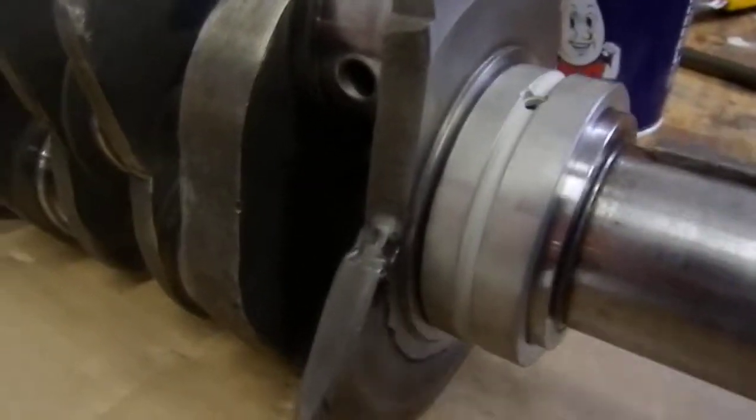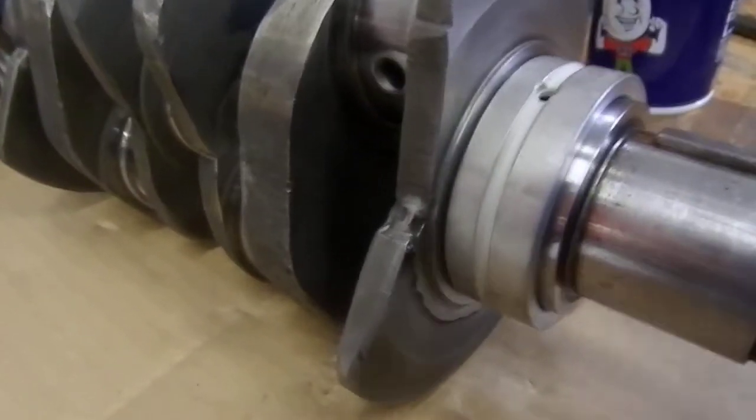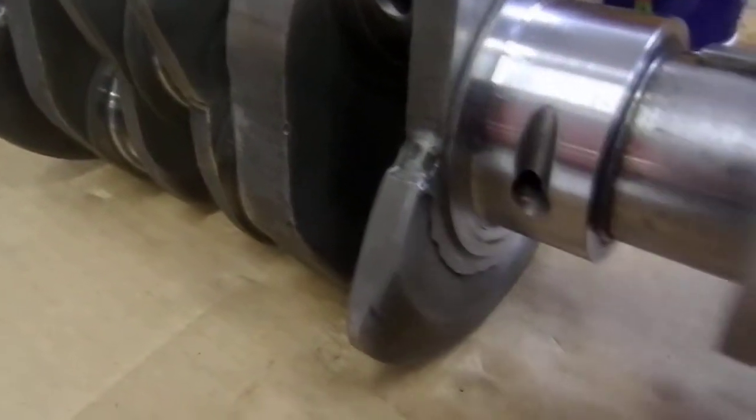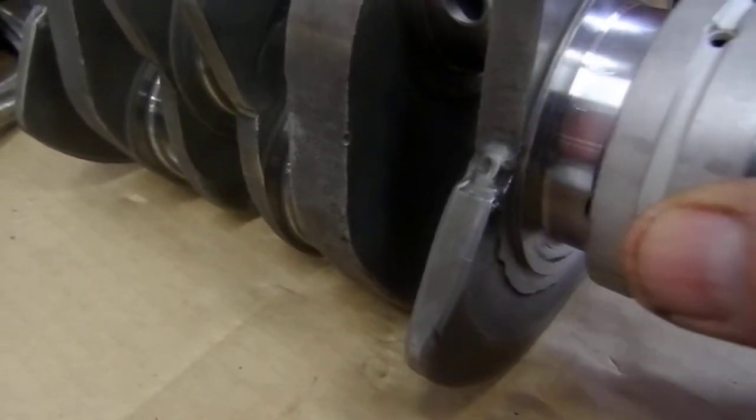Taking a look at this VW Type 1 1600 69 millimeter crankshaft, it's counter-weighted. Installing brand new bearings, and prior to the install you always check to make sure the correct dimension is there based on what you've ordered.